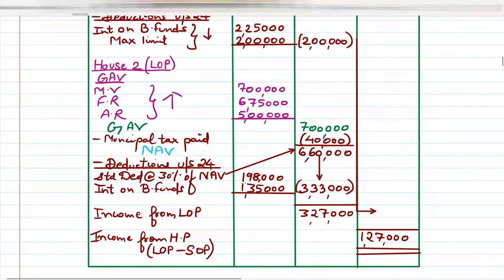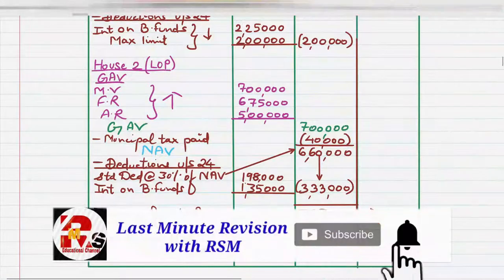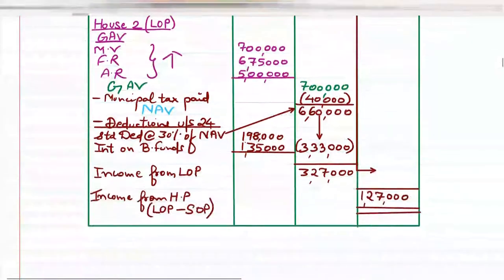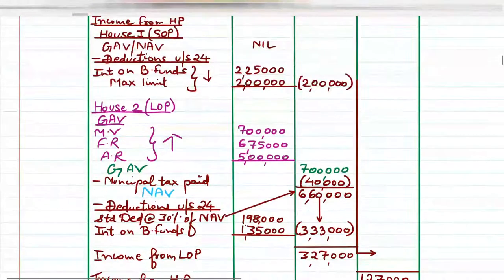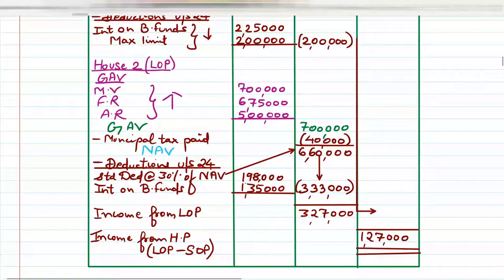Now calculate Income from House Property: LOP income minus SOP income. LOP = ₹3,27,000 and SOP = negative ₹2,00,000. So ₹3,27,000 − ₹2,00,000 = ₹1,27,000. This is our final answer — Income from House Property = ₹1,27,000, written in the third column with a double underline.